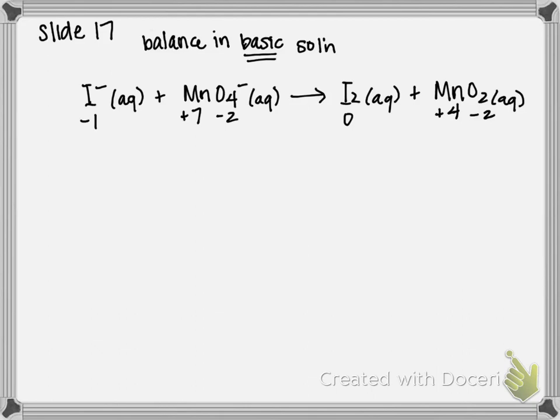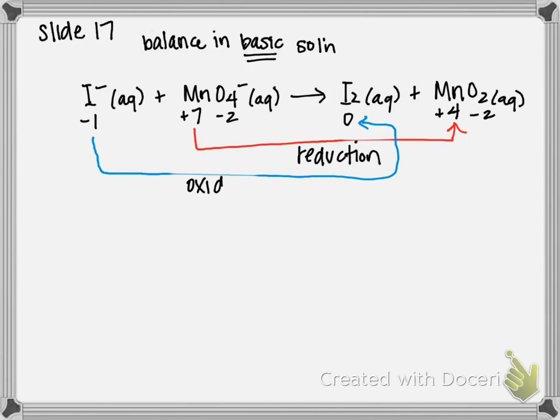So for my reduction, it's going to be manganese going from plus 7 to plus 4. That's my reduction half reaction. And for my oxidation, it's iodine going from negative 1 to 0. It's getting more positive, so therefore that's an oxidation.